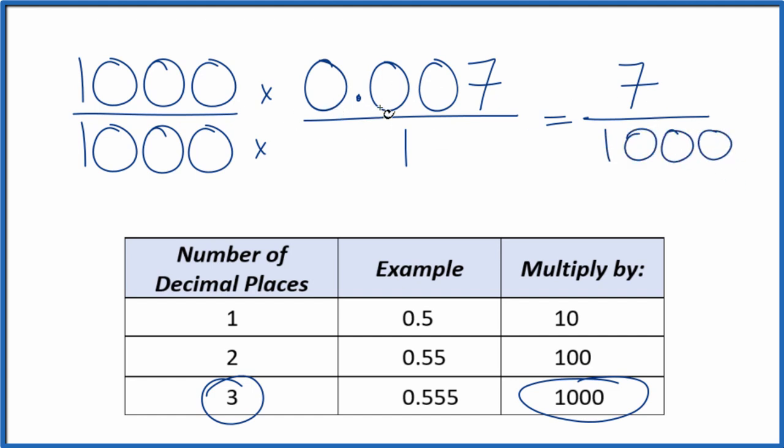So the decimal 0.007 is equal to the fraction 7 over 1,000. And if you divide 7 by 1,000, you'll get 0.007. These are the same thing, they're just written differently.